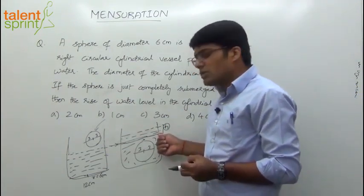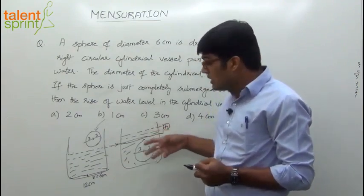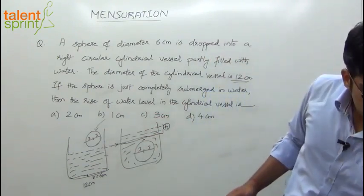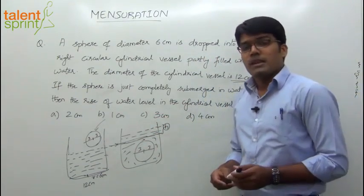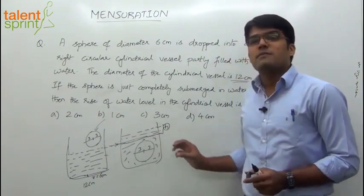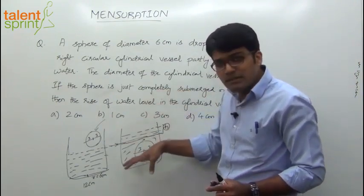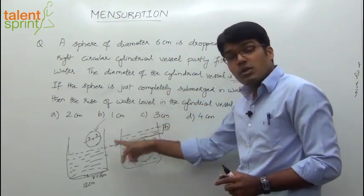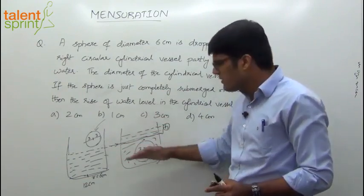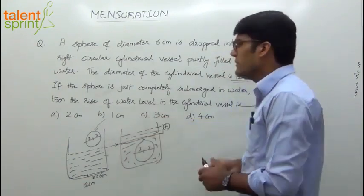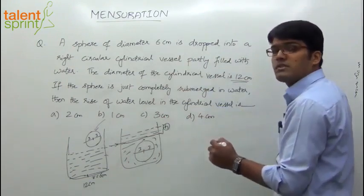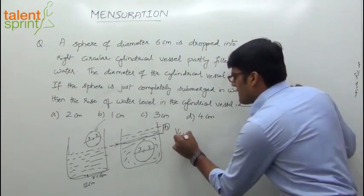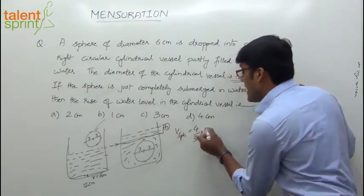The rise in the level of water is due to the volume of the sphere. In all these cases, we just need to balance the volume — the volume of the sphere should be balanced with the volume of the water rise. Volume of the sphere is 4/3 π r³.